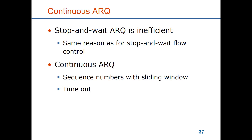This is called continuous ARQ. It is continuous because in ideal circumstances where all frames are delivered without error, the sender should be able to use the full link and send frame after frame and get acknowledgements in time before it gets halted by flow control. The ARQ protocol uses sequence numbers for the frames in the sliding window and it uses timeout. There are two variants: go-back-N and selective reject.